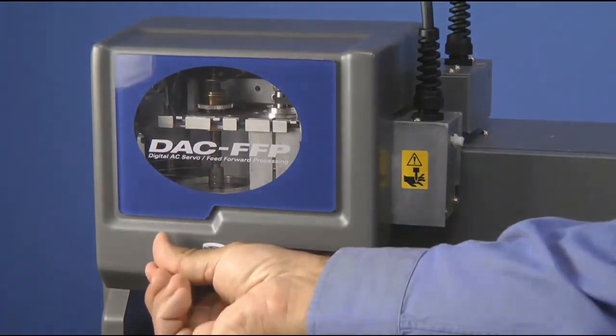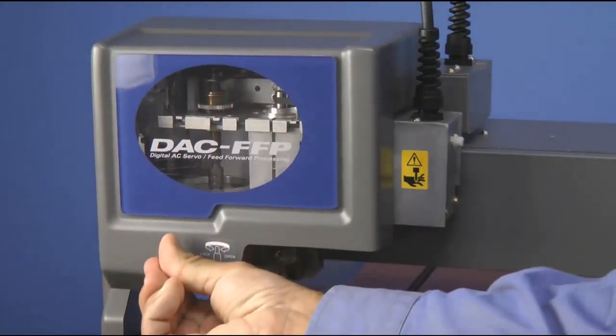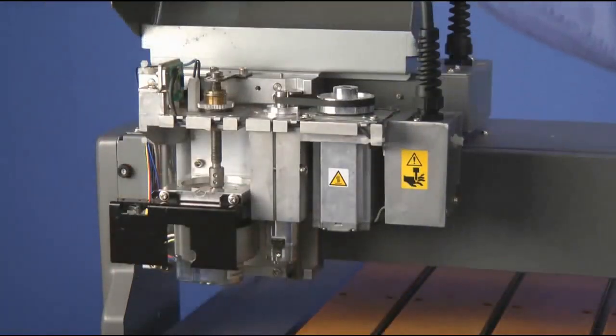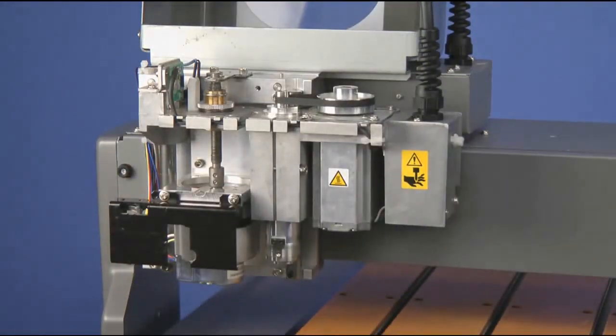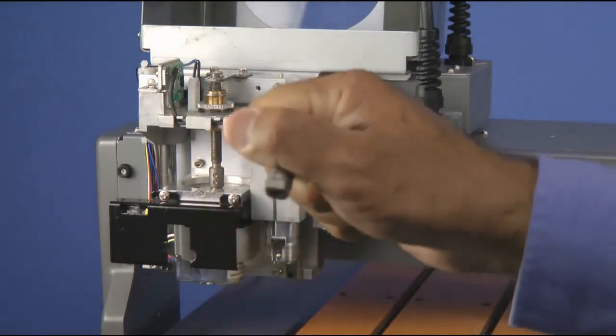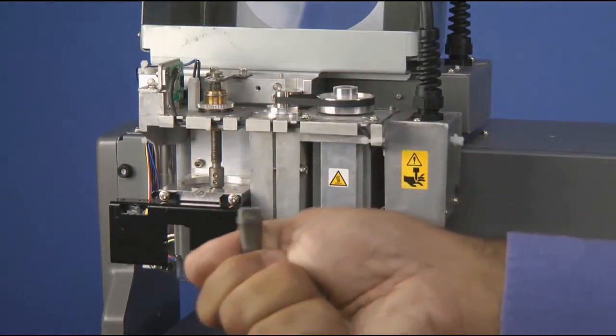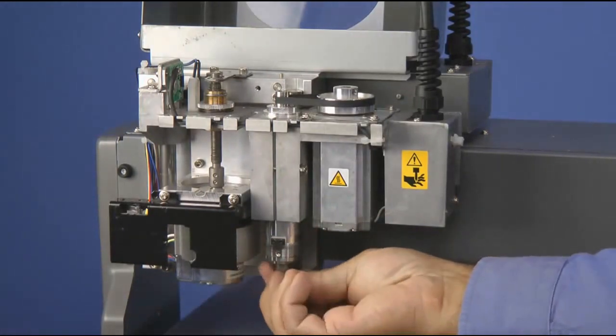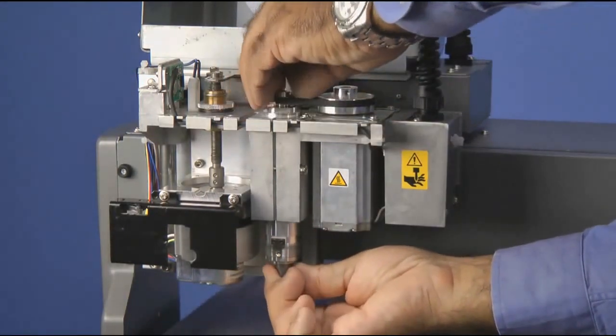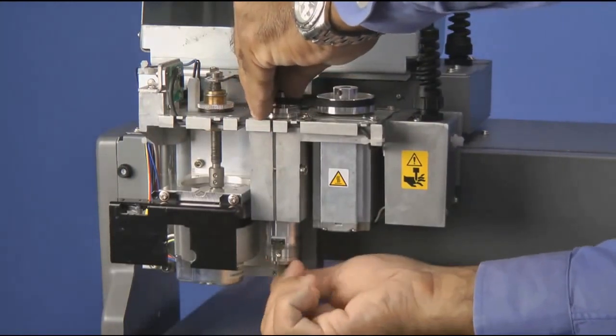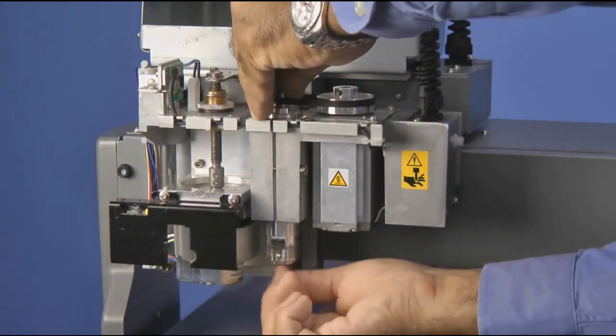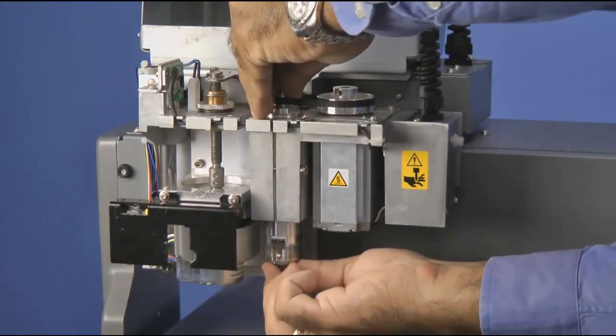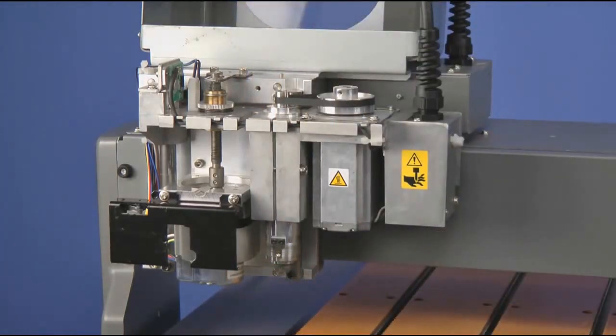Next, we will open up the spindle cover and we will go ahead and take our 1164 solid collet. And we will install the collet to the bottom of the spindle assembly. For this, you are using a reverse thread, turning it counter-clockwise. You want to go ahead and hand-tighten it.